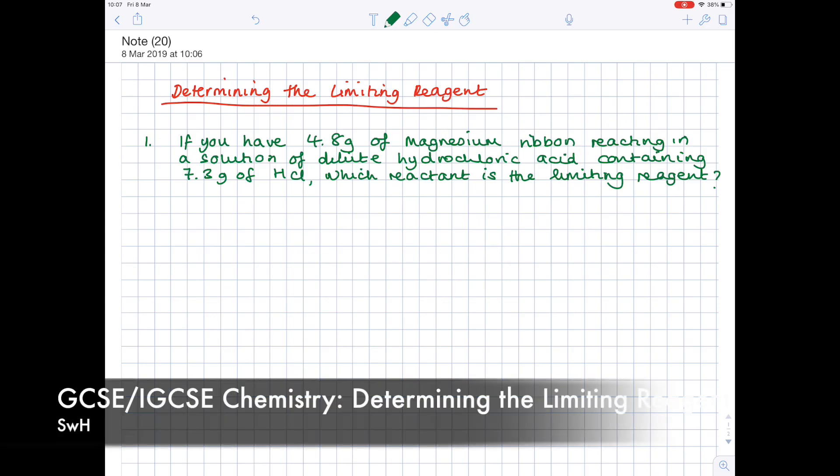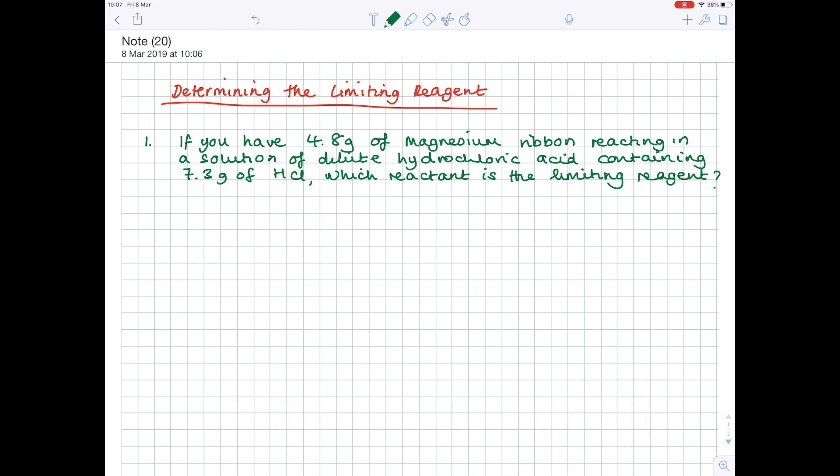Looking at determining the limiting reagent. So question one: if you have 4.8 grams of magnesium ribbon reacting in a solution of dilute hydrochloric acid containing 7.3 grams of hydrochloric acid...